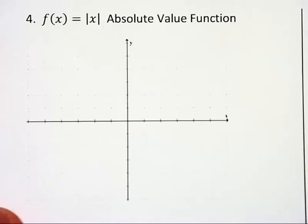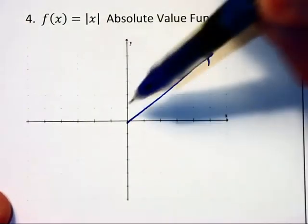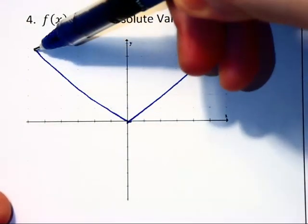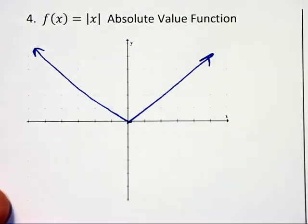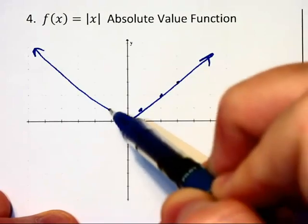The next graph that you pretty much should have memorized is that of y equals absolute value of x. This is just going to be a v-shaped graph which extends into both the first and second quadrants. It goes through the point 1, 1, 2, 2, 3, 2, and negative 1, 1, negative 2, 2, etc.